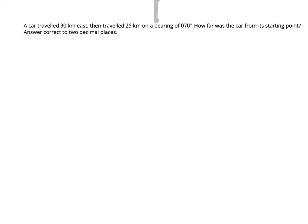A car traveled 30 kilometers east, then traveled 25 kilometers on a bearing of 70 degrees. How far is the car from its starting point? Answer correct to two decimal places. In your test, underline the two decimal places so you're checking your final answer. Even when they don't have a diagram in a bearing question, you should always be drawing a diagram. I'm going to start off with the scenario. You generally have a starting point, so I'll draw a little compass and this is where I start.